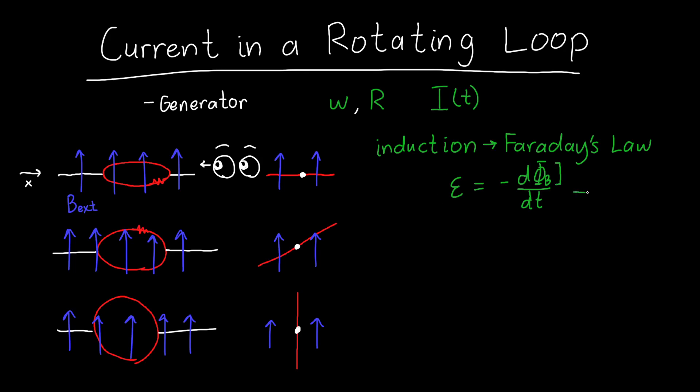And then once we have the EMF, we can figure out the current using Ohm's law. So I is equal to the induced EMF divided by the resistance of the coil, which we already know.